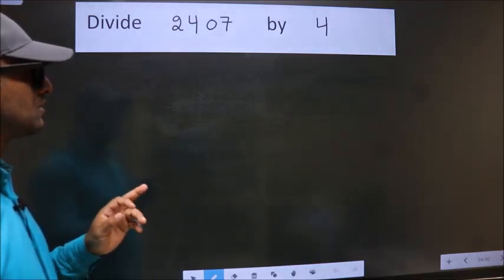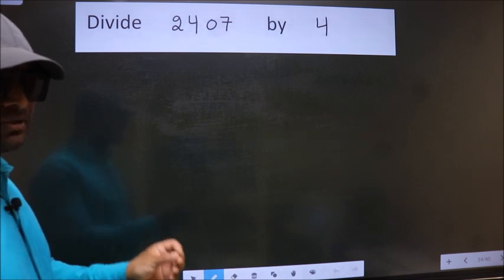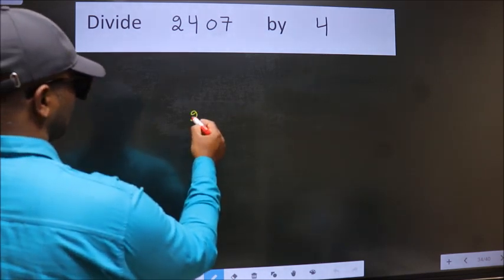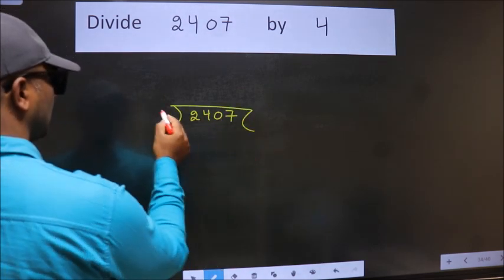Divide 2407 by 4. To do this division we should frame it in this way. 2407 here, 4 here.